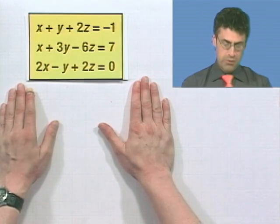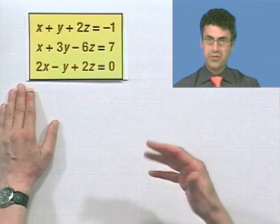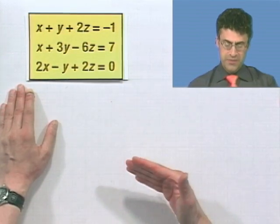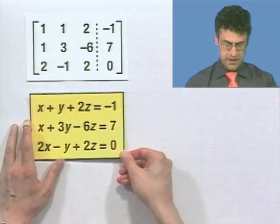So suppose we have this system, three equations, three unknowns, and we want to actually consider the solution to this. And we're going to use the method of Gaussian elimination. So, of course, the first thing we want to do is we want to create the augmented matrix that's associated with this system, which actually I've already done here.